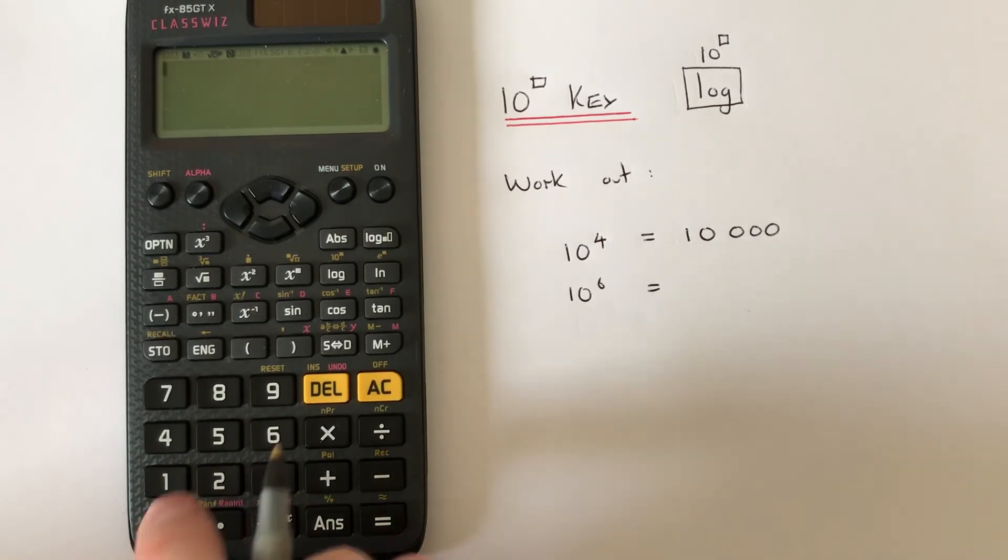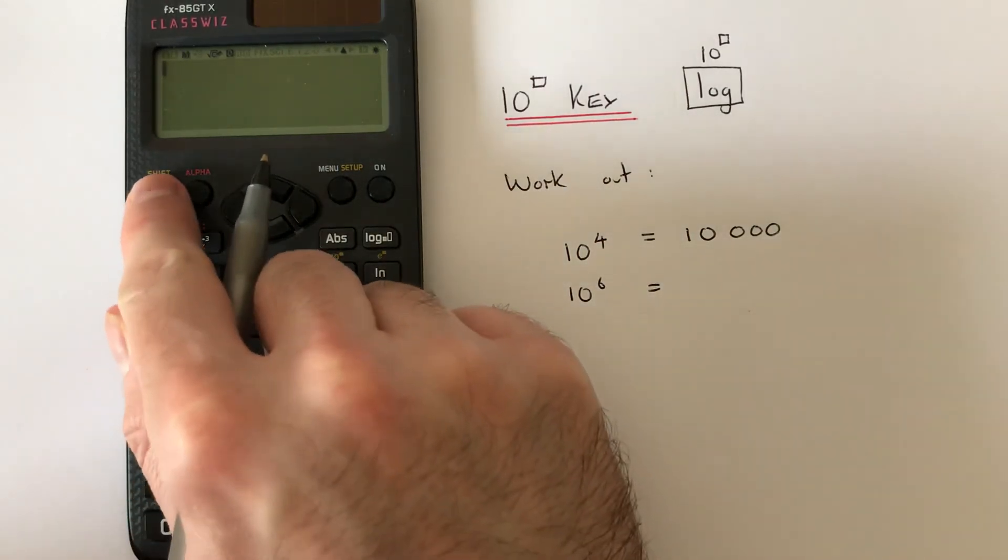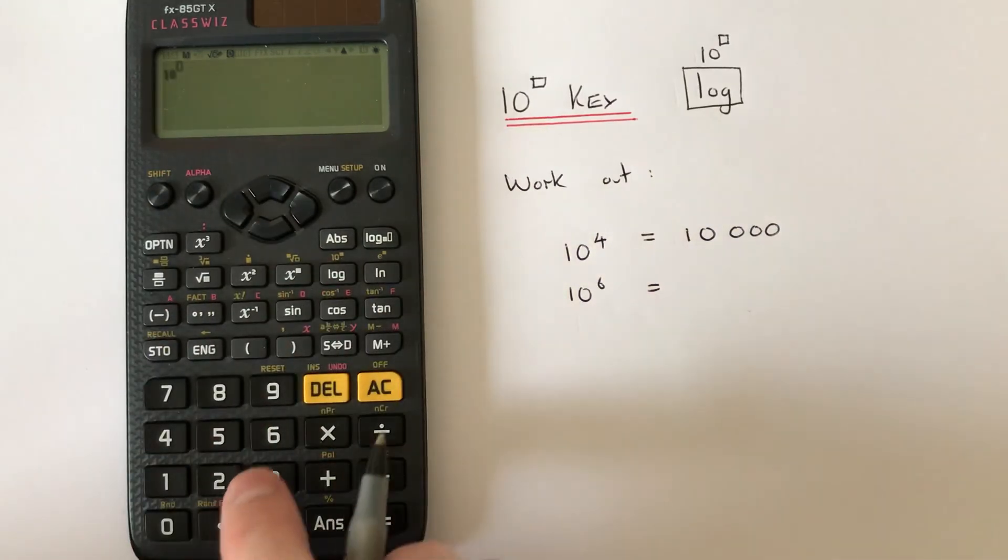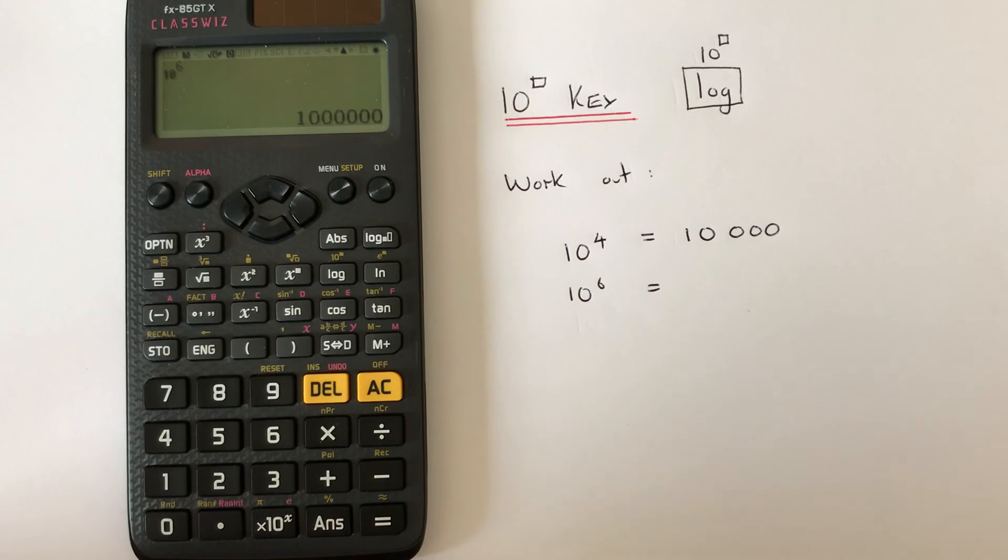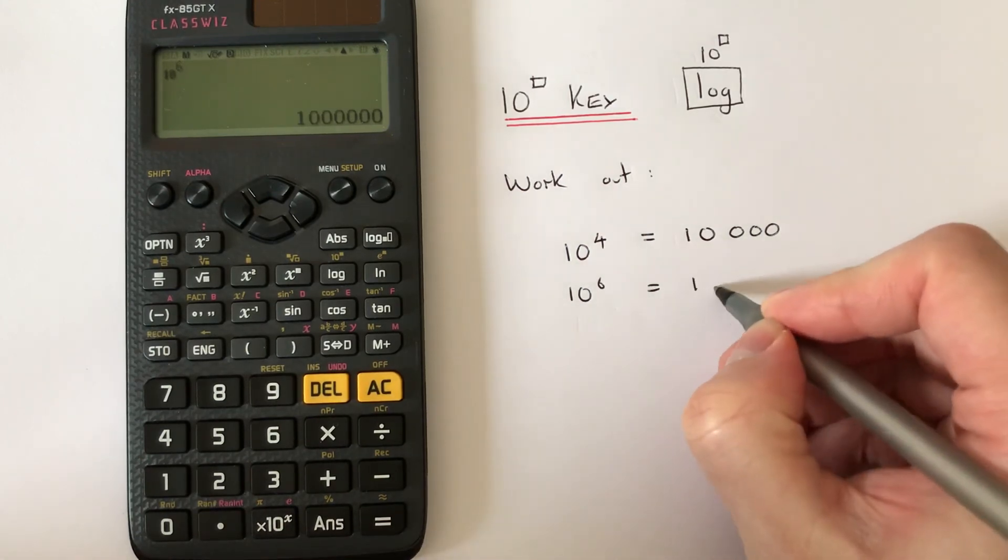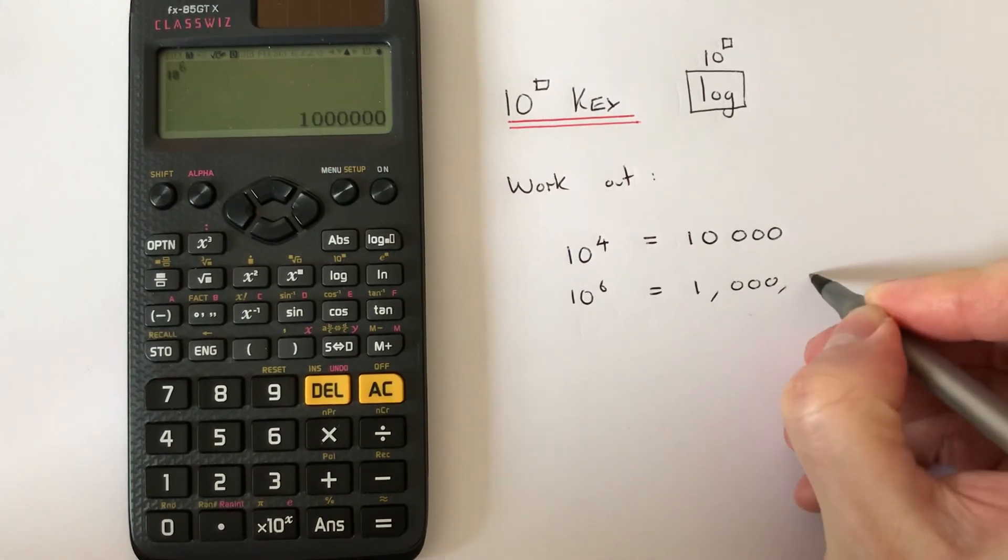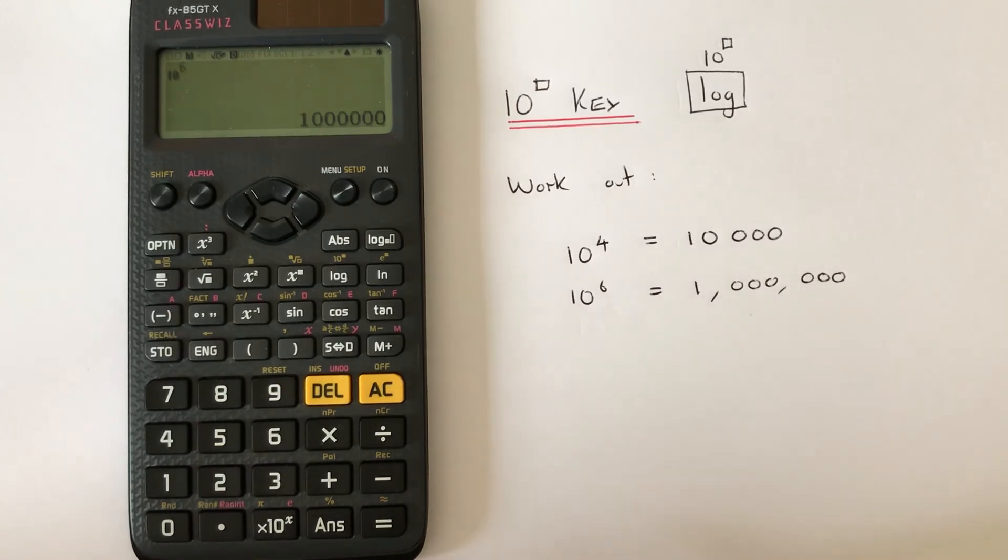Let's have a look at the second example. I've got 10 to the power of 6. So if we press shift log and press 6 in the little box there, hit the equals, and we get the answer 1 million. Thanks for watching guys, see you next time.